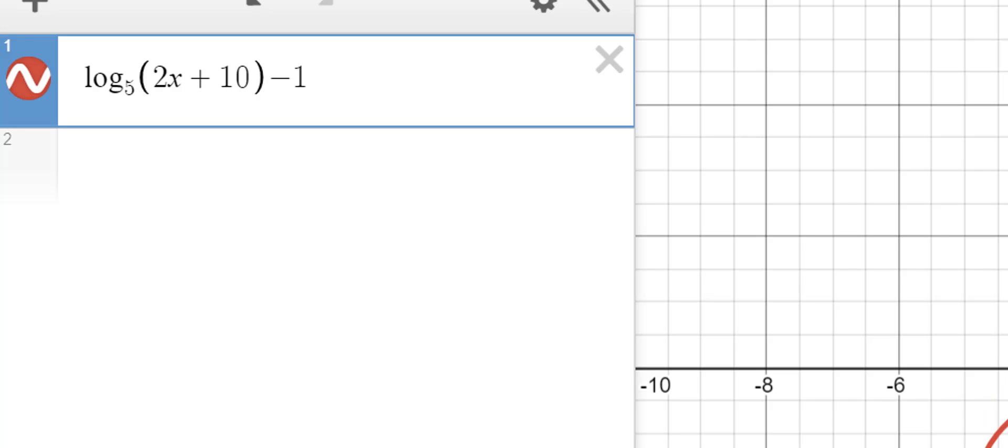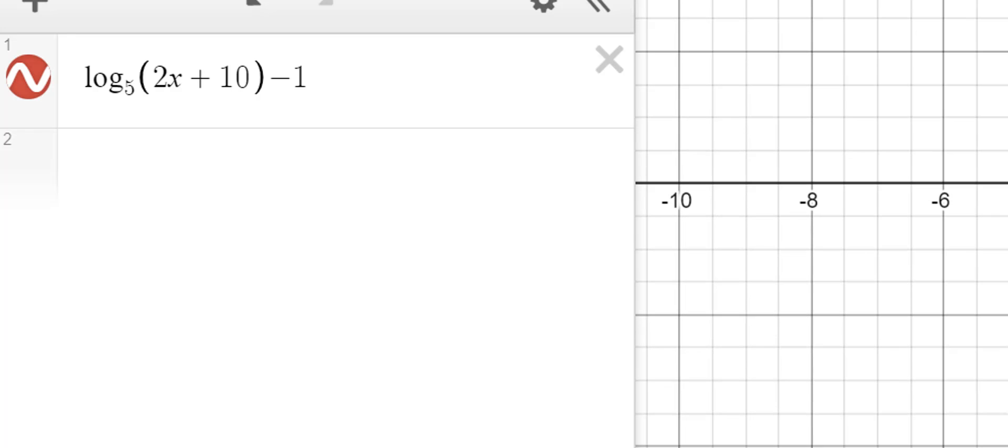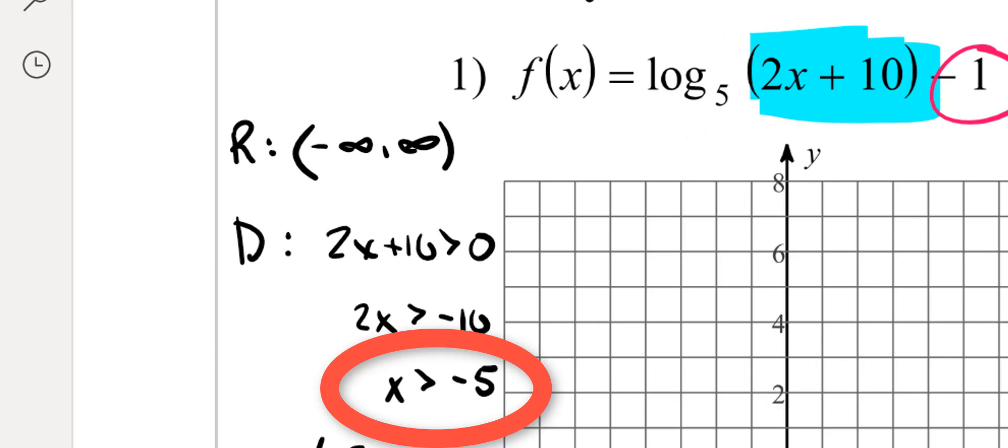Now a couple things on this. So when we solved that before, when we looked at our argument, we simplified that, or solved that for x. We got x was greater than negative 5.